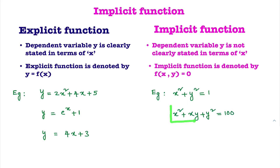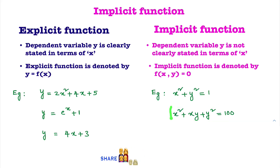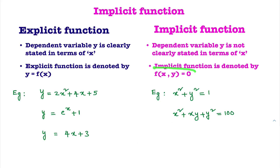You see this example. By seeing this equation, is dependent variable y clearly stated in terms of x? No. In this equation, two variables are there, x and y. So this is an example for implicit function — y is not clearly stated in terms of x. Implicit function is denoted by f(x, y) = 0.